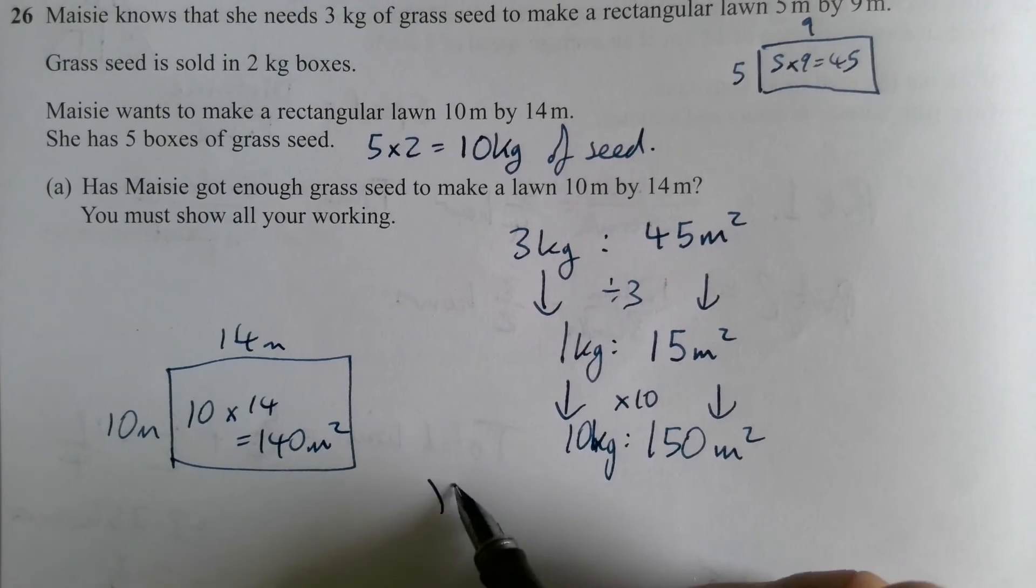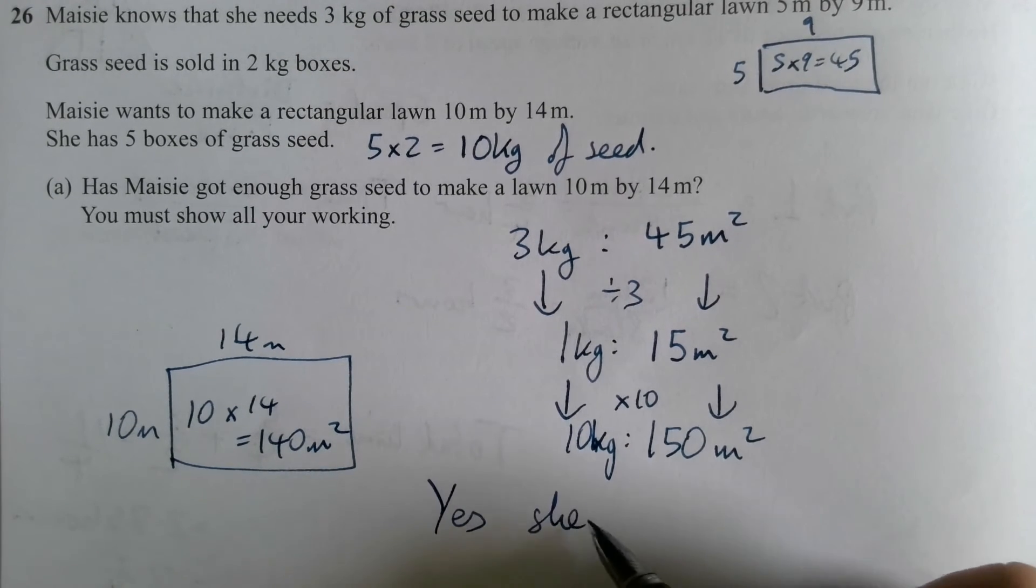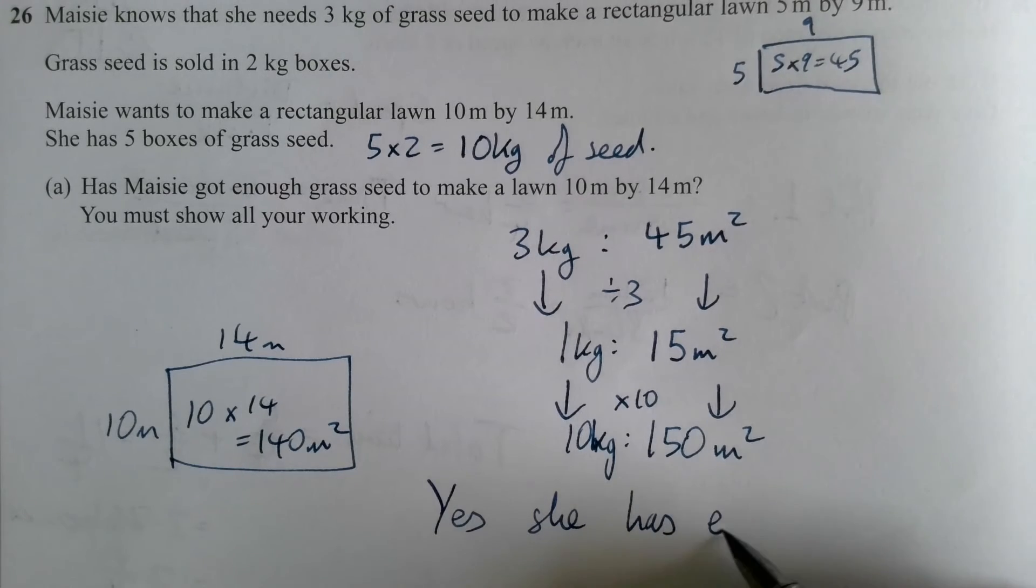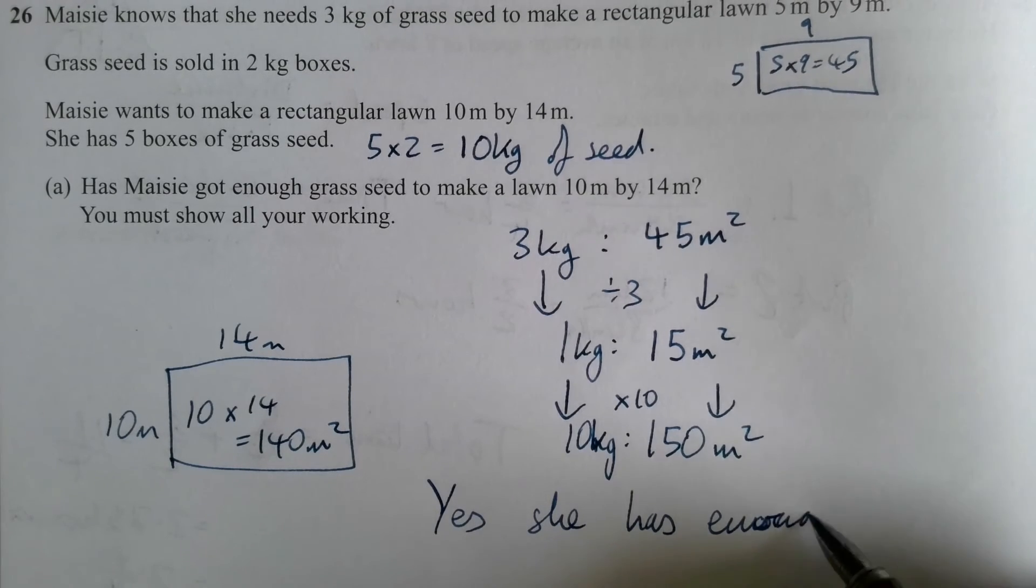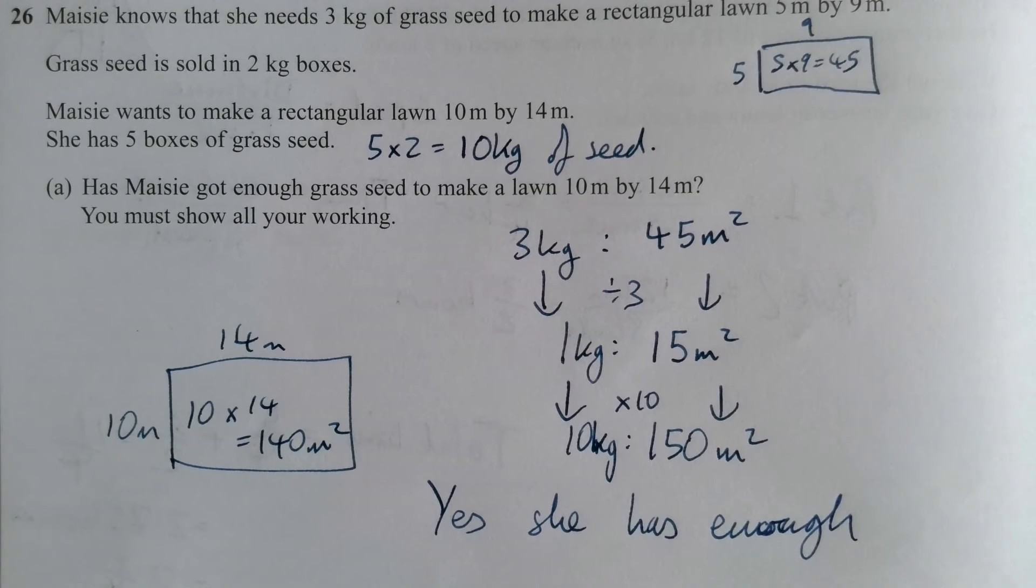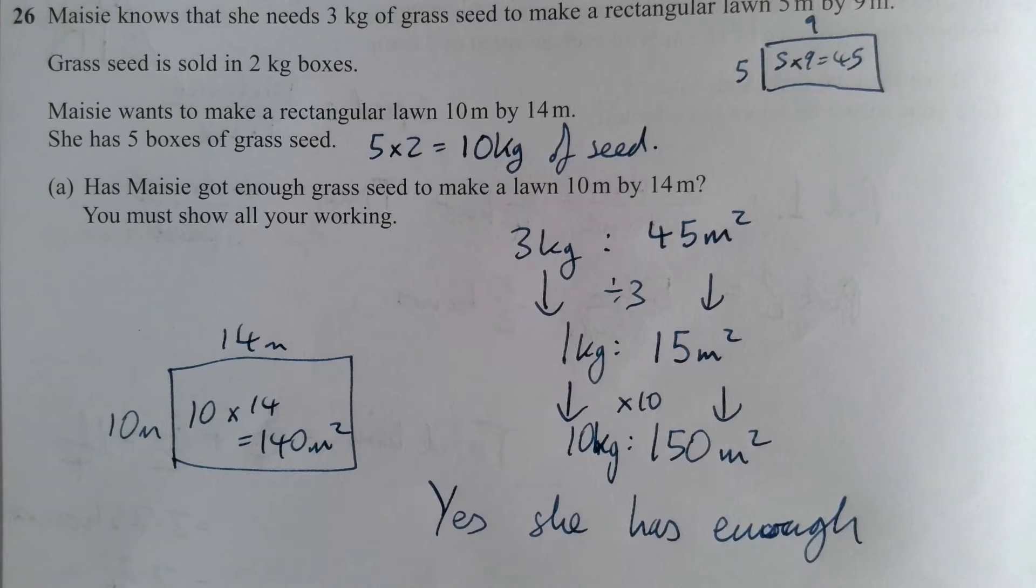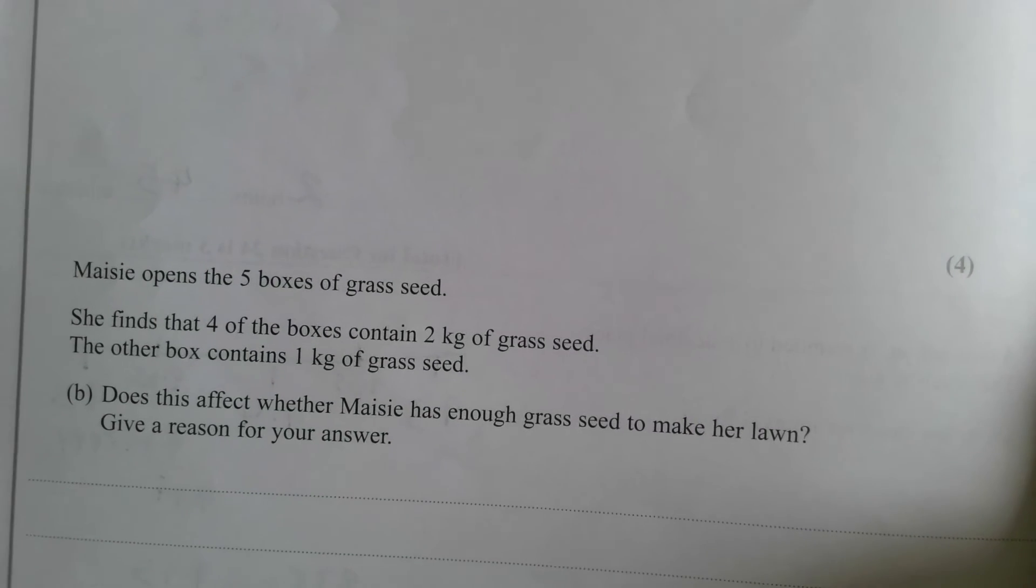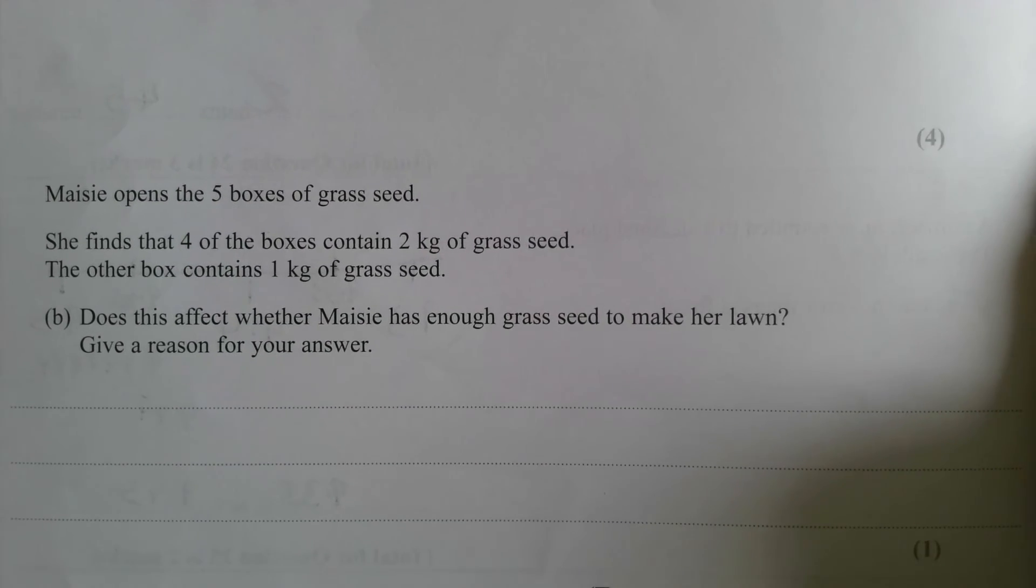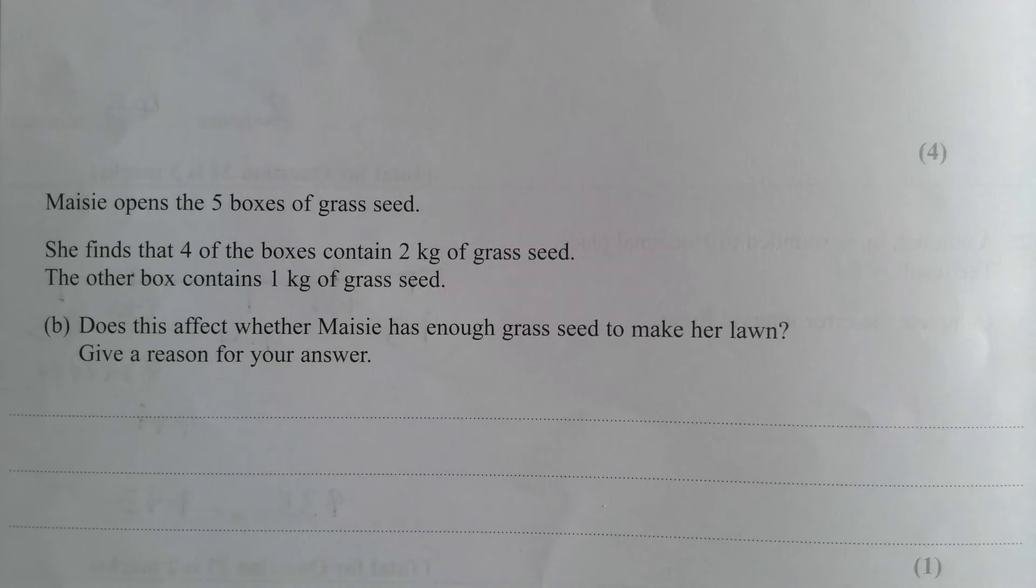The lawn she's got is 10 meters by 14 meters. 10 times 14 equals 140 square meters. She has 150 square meters. So then you can say yes, she has enough. If you want to show off, you can say, and she has enough for another 10 square meters of lawn beyond that. Now that's not totally the end of the question because there's then another question. Maisie opens the five boxes of grass seed. Have a little look at this. Even if you get lost on what happened on part A, you can still get a mark here.